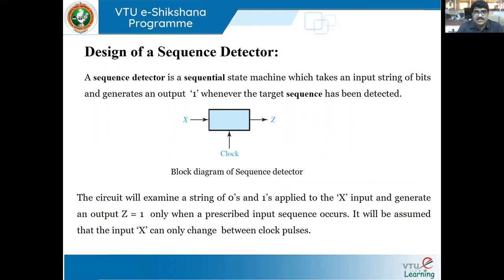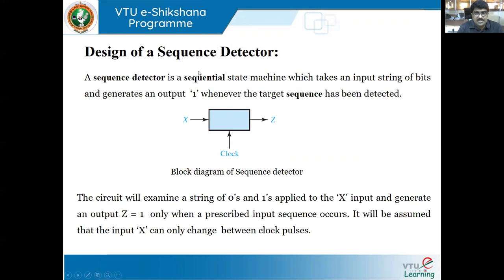One application of the digital circuit may be a sequence detector. A sequence detector is a sequential state machine — it can be of Mealy model or Moore model — which takes an input string of bits and generates an output one whenever the target sequence has been detected.